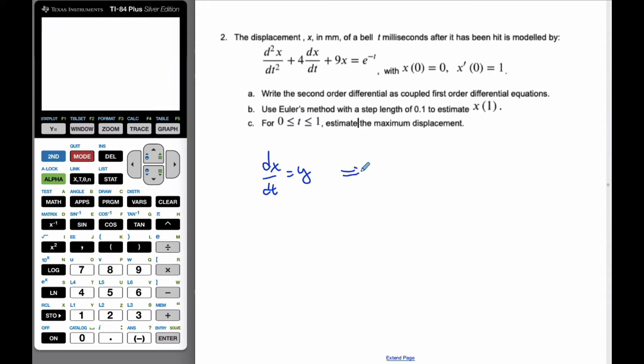Because I know if I do the derivative here, well, that's the derivative of x, the second derivative, that has to equal to the first derivative. So if I use that idea, then I can replace this with dy/dt plus 4y plus 9x equals e to the negative t.